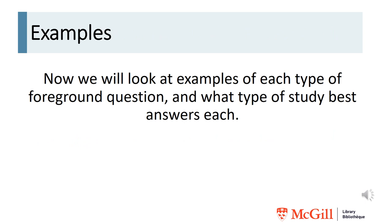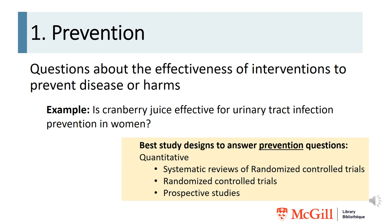Prevention questions are about the effectiveness of interventions to prevent disease or harms. For example: is cranberry juice effective for urinary tract infection prevention in women? The best study designs to answer prevention questions are quantitative, such as systematic reviews of randomized controlled trials, randomized controlled trials, or prospective studies.